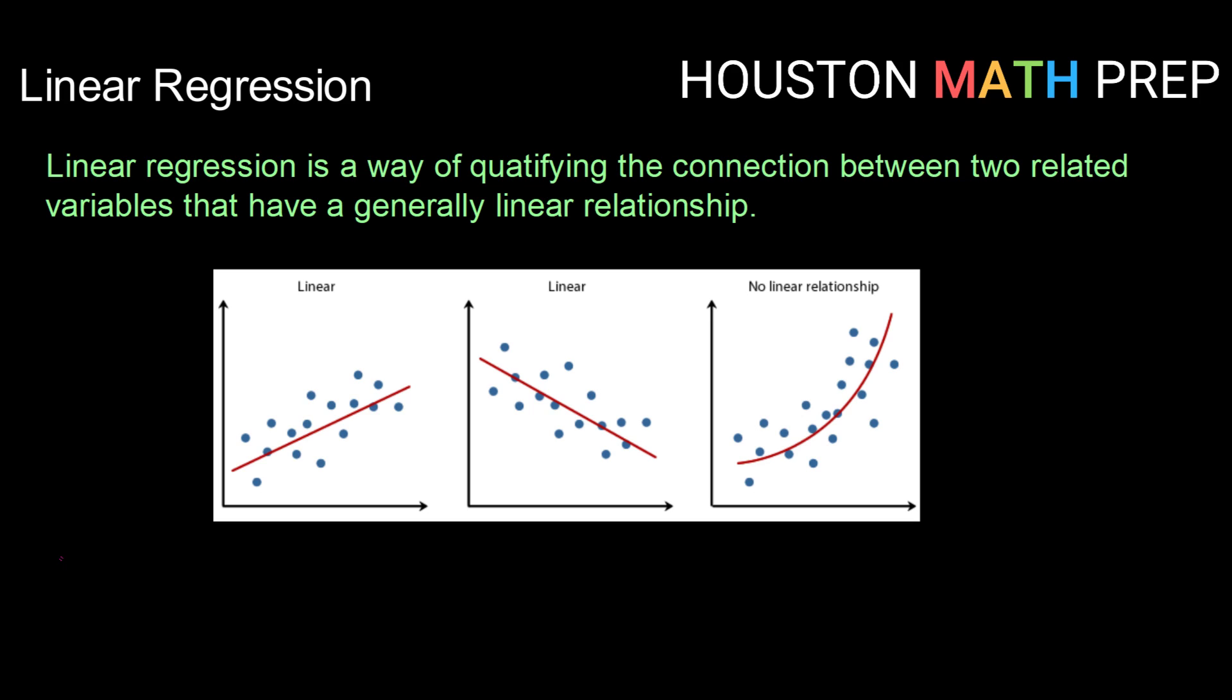Now we can have two main types of linear relationships when it comes to two related variables. Here in the first, we have an example of a positive linear relationship. So that means as our x variable increases, our y variable also increases. So as one variable goes up, so does the other.